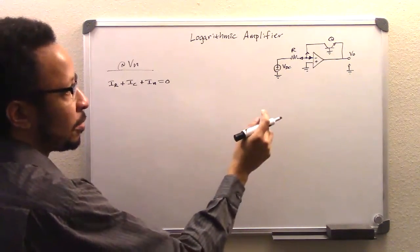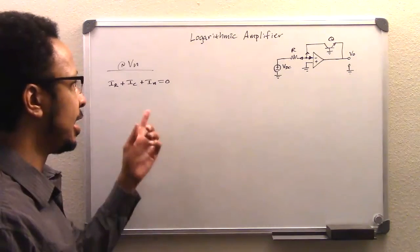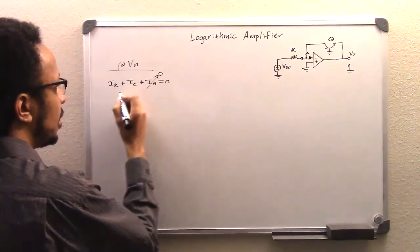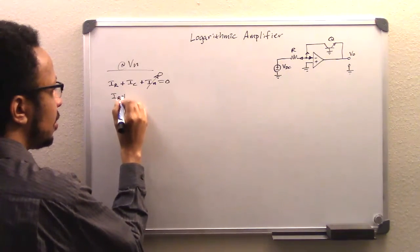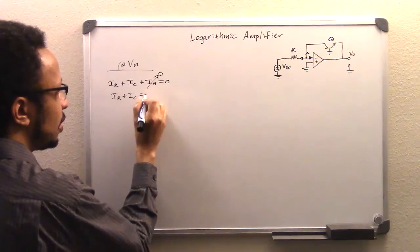And what we'll know from an op-amp property is that for ideal op-amp, IN is going to be zero. So that's going to come out of our equation here. And we're just going to be left with IR plus IC equals zero.